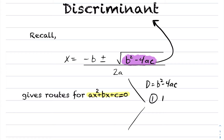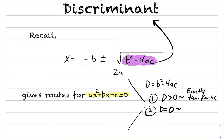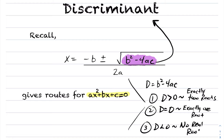Rule number one: if my discriminant, b² minus 4ac, is greater than zero, I'm going to have exactly two roots. If my discriminant equals zero, I'm going to have exactly one root. And lastly, if my discriminant is less than zero, I'm going to have no real roots.